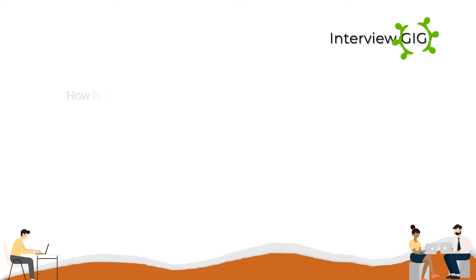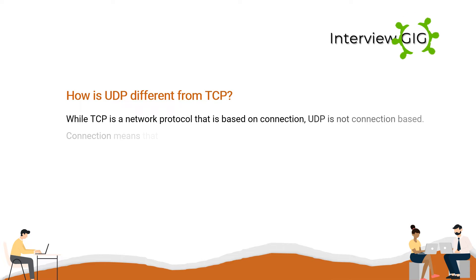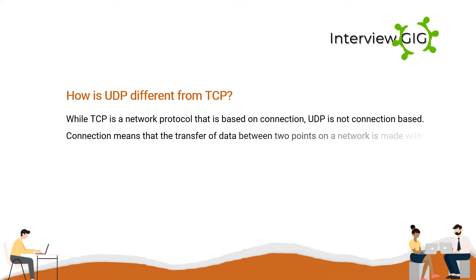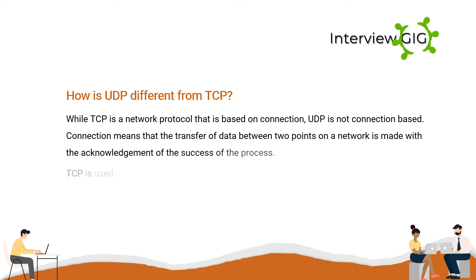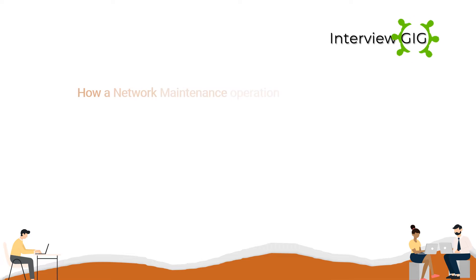How is UDP different from TCP? While TCP is a network protocol that is based on connection, UDP is not connection-based. Connection means that the transfer of data between two points on a network is made with the acknowledgement of the success of the process. TCP is used if we want to transfer data and receive confirmation that the data was really sent, no matter what time period it was made in.